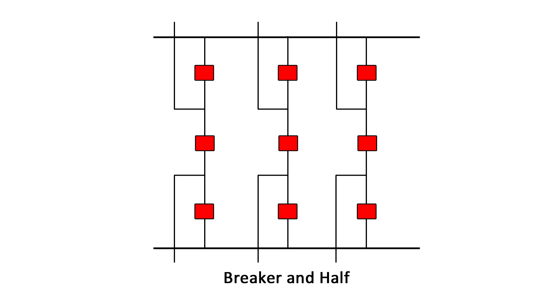Think of it as: to control one circuit requires one full-and-a-half breaker. The middle breaker is shared by both circuits, similar to a ring bus scheme where each circuit is fed from both sides.